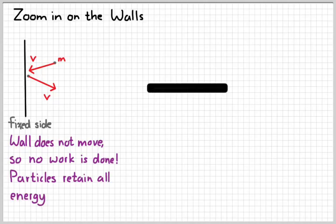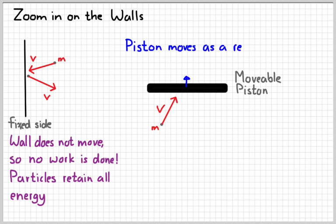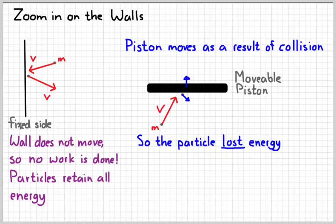Now if instead we consider the movable piston and we consider the same collision that's about to happen to it, because the piston moves up a little bit, that means it's had work done on it, then the particle is going to slow down. So the particle in this collision, because the piston is free to move, because that particle gave away some of the energy in moving the piston, it's going to go slower and it's lost energy.